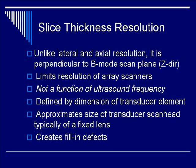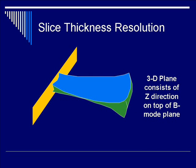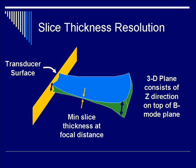Clinically, it creates a fill-on defect if you're measuring away from the focal zone. Here's a cartoon of the spatial variation of the slice-thickness plane. You can see that near the transducer surface, you have a finite thickness of the z-direction. It gets even bigger in the far field away from the focal zone. However, right at the focal length, slice-thickness is minimum.